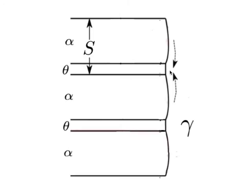The diffusion distance is related to the interlamellar spacing S. In a growth rate calculation, it does not matter whether you calculate for cementite or ferrite growth from austenite — they are both growing at the same rate.